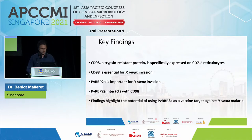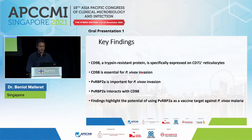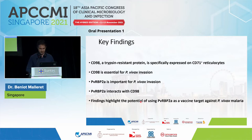In terms of key findings: CD98, a trypsin-resistant protein, is specifically expressed at the surface of CD71-positive reticulocytes; CD98 is essential for P. vivax invasion; RBP2A is important for P. vivax invasion; RBP2A interacts with CD98; and finally, RBP2A has potential as a vaccine candidate against P. vivax malaria. I would like to thank all the people involved in this work, particularly the team of Laurent Rénia and Bruce Russell. Thank you for your attention.